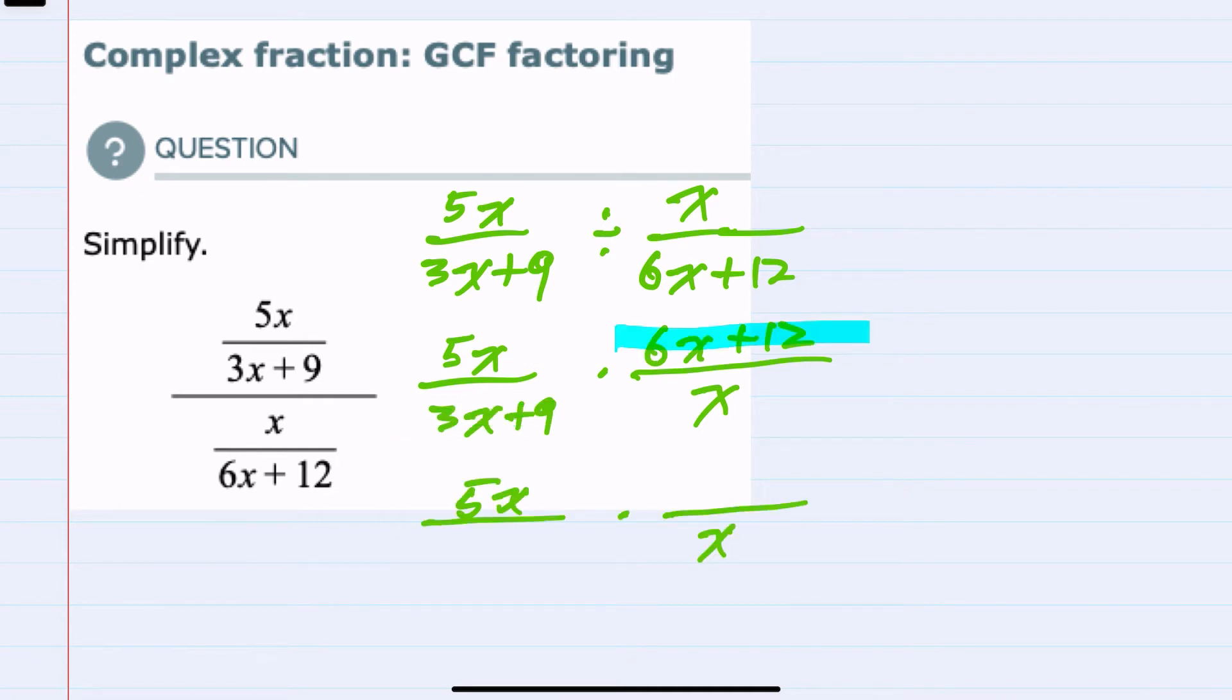Doing so means that on the top, when I factor out a 6, I'm left with the x from the first term and a plus 2 from the second term. And when I factor the bottom, taking the 3 out, I'm again left with an x in the first term and then a 9 divided by 3 is 3 in the second term.